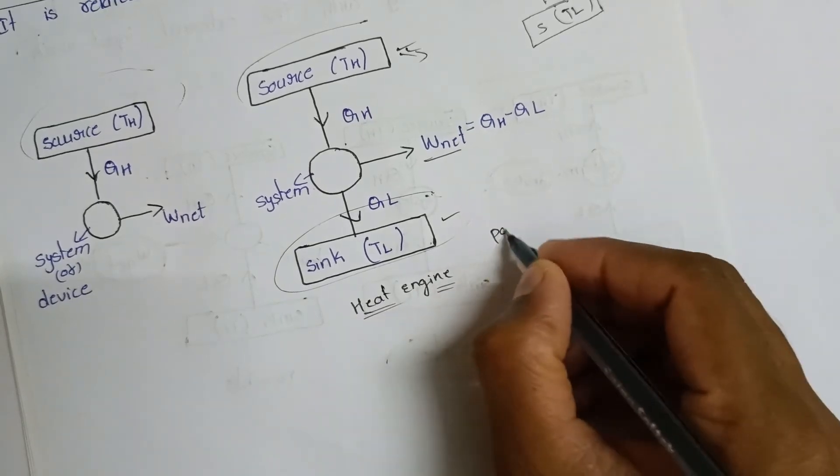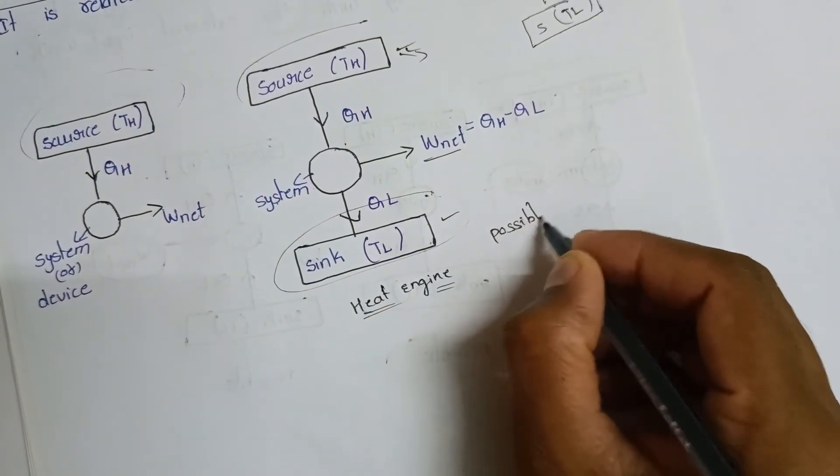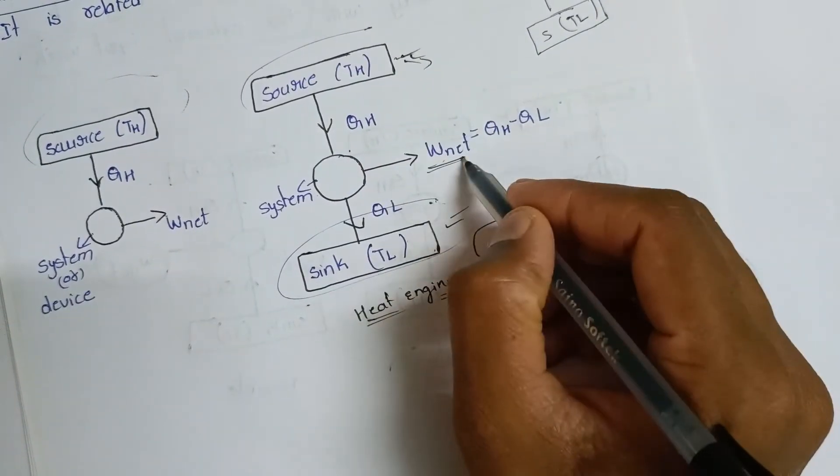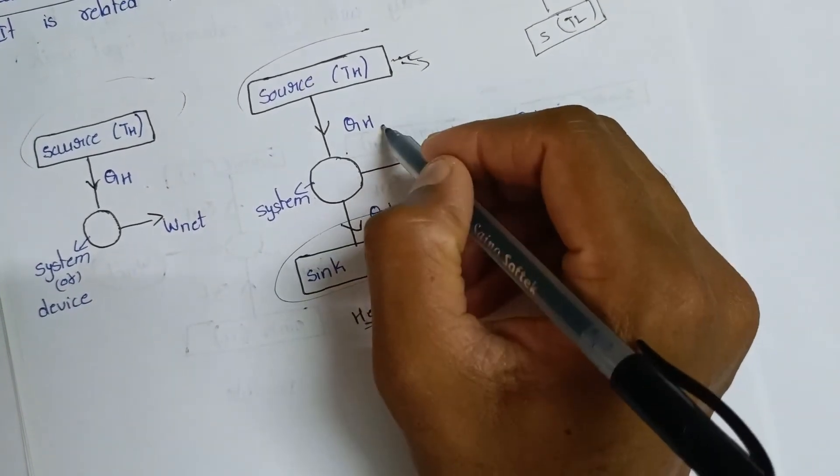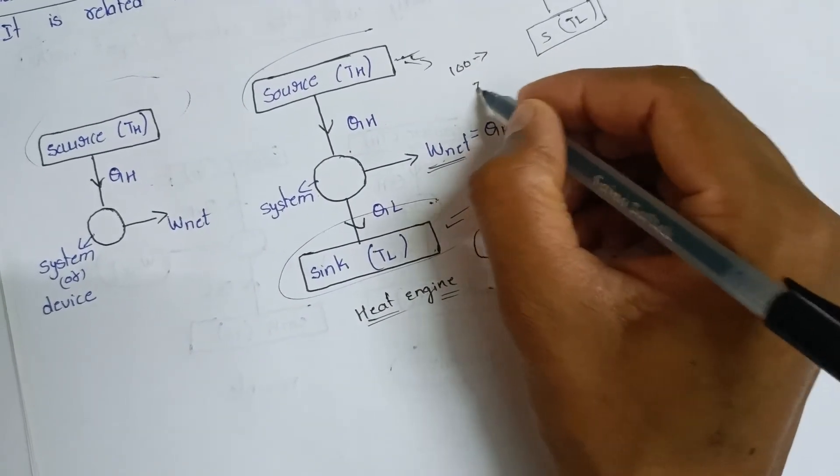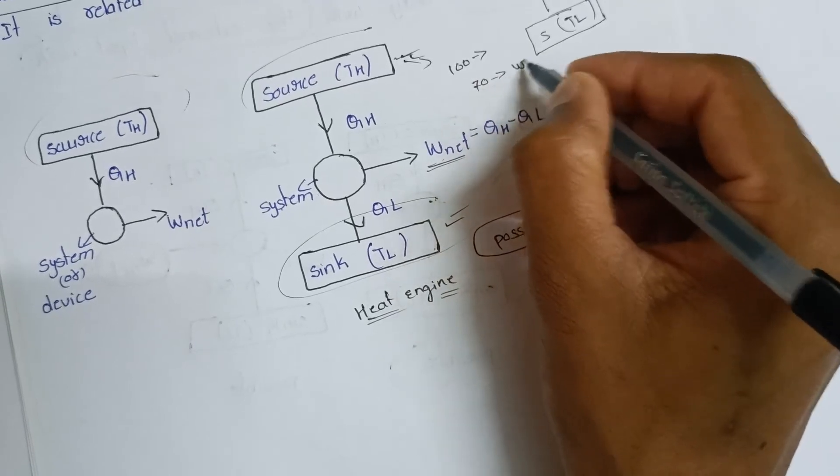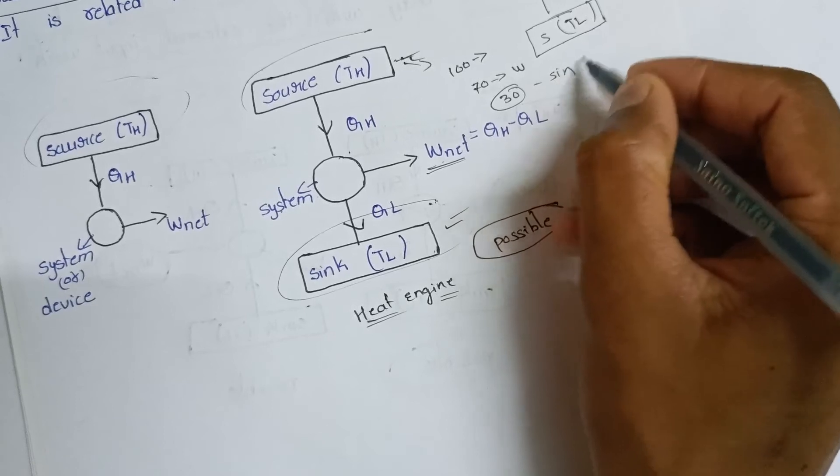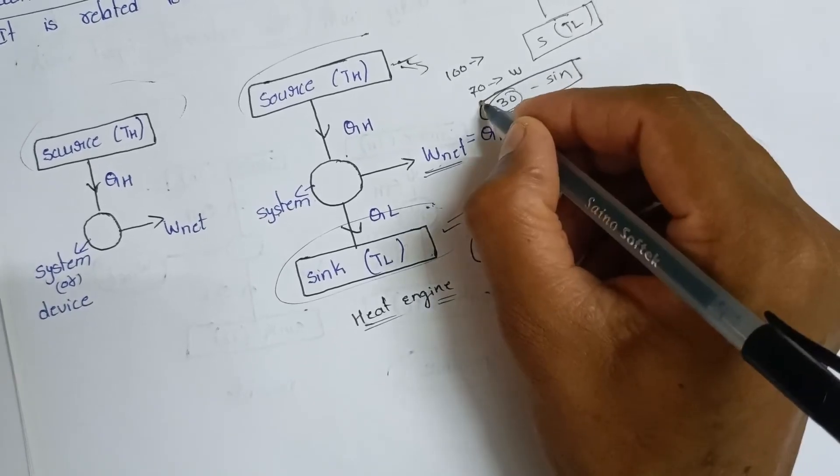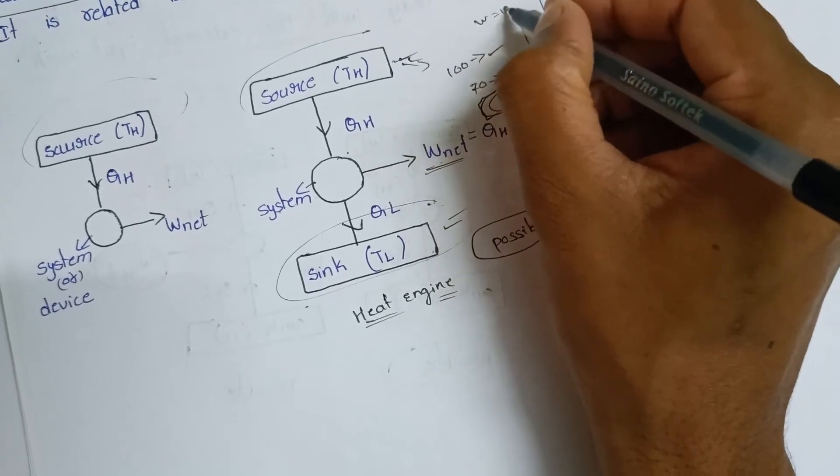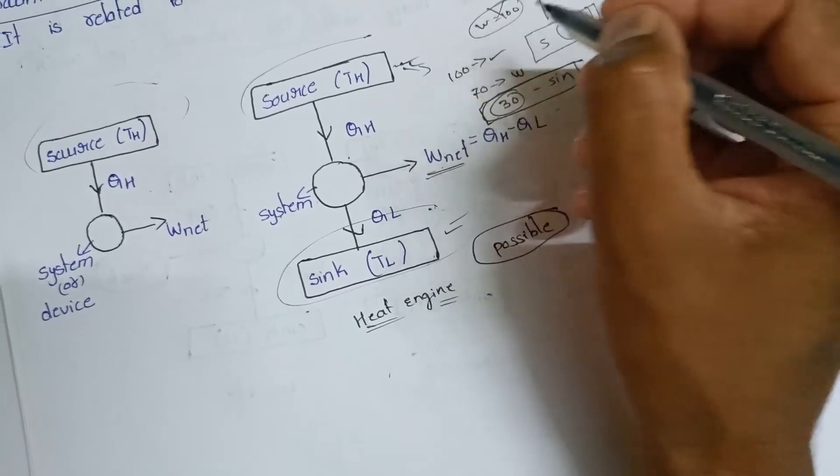For example, if 100% heat is applied, only 70% converts to work. The remaining 30% goes to the sink. You cannot have 100% heat convert to 100% work. That is impossible.